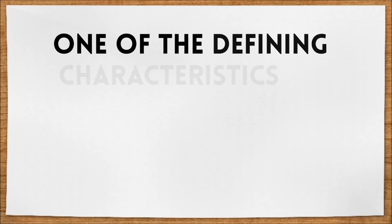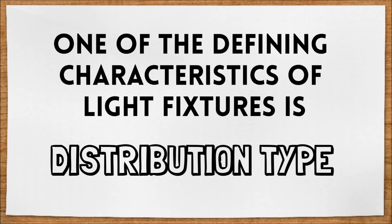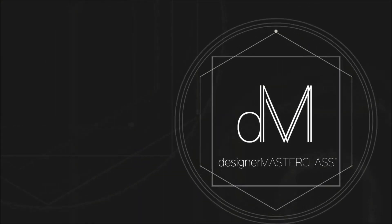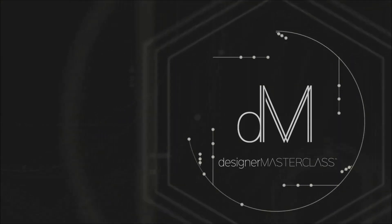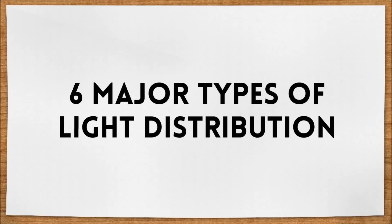Did you know that one of the major defining characteristics of light fixtures is their distribution type? This video will go over the different types of light distribution and the differences between them. There are six major types of light distribution — let's jump right in.